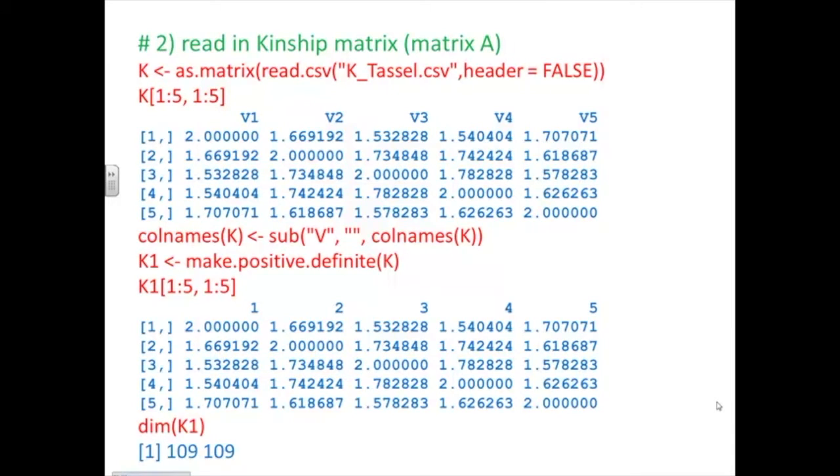So we're going to start by reading in a kinship matrix. And not surprisingly, the title tells you how I made that matrix. And you can see what the diagonal is. It's 2. So it's actually what in the literature is usually referred to as an A matrix. You can see as I read it in as a matrix that R ends up adding this V here. And I don't want that.